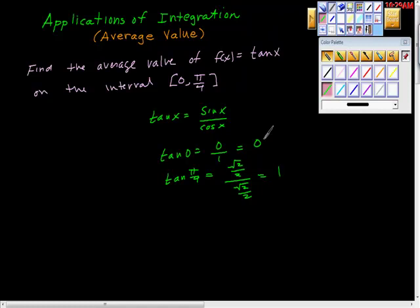So this should give us some range of average value here. The average value on this interval for tan should be greater than 0 but less than 1. And I think that's really important to kind of have some expected value there.